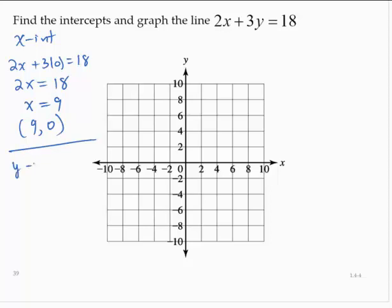Finding the y-intercept by letting x take the value 0, we'd have 2 times 0 plus 3y is 18. So then 3y equals 18, which means that y equals 6. So we have the ordered pair 0, 6.